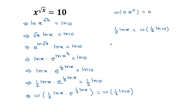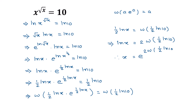Multiplying both sides by 2, the 1/2 cancels, giving ln of x is equal to 2 times W of 1/2 times ln of 10. So the value of x will be e to the power of 2 times W of 1/2 times ln of 10.